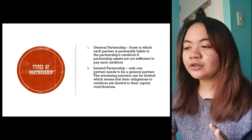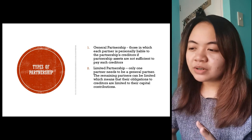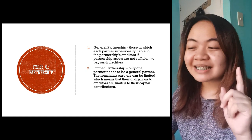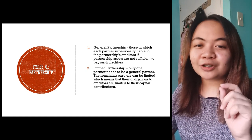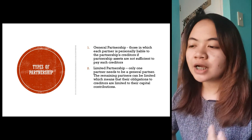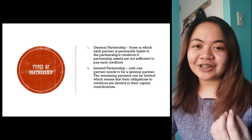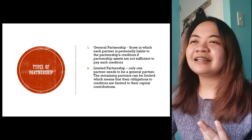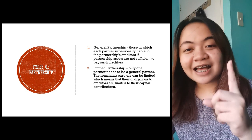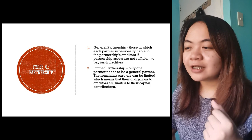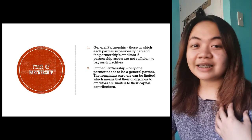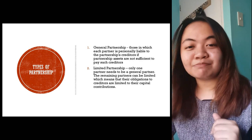Next, we have limited partnership, where only one partner needs to be a general partner. So all the others are limited partners, meaning creditors can only go after their capital contribution to the partnership — that's the limit. If all partnership assets are exhausted and debts remain, only the general partner can be pursued. At least many people are willing to be limited partners, knowing their personal assets are protected — only their capital contribution is at risk.